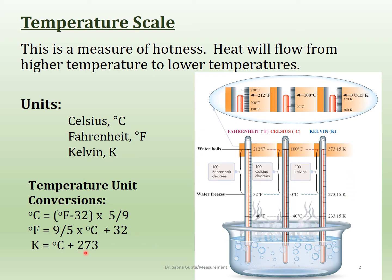Here are the conversion formulas you'll use. To convert Fahrenheit to Celsius, subtract 32 from the Fahrenheit number and multiply by 5/9. To convert Celsius to Fahrenheit, use: (Celsius + 32) × 9/5. To convert Celsius to Kelvin, simply add 273. There is no direct conversion from Fahrenheit to Kelvin — you must first convert to Celsius, then to Kelvin. I will give you these formulas for the exam; you just need to know how to use them.